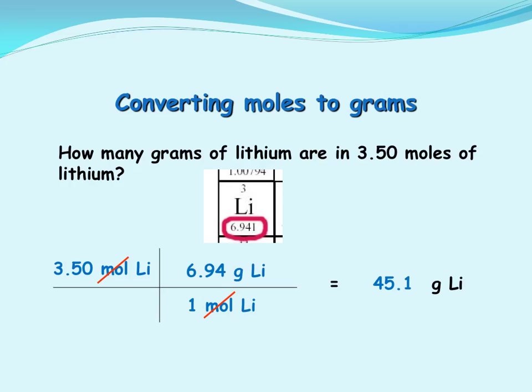Okay, to set up the problem, given information goes in the first bracket. Since we need to go from moles to grams, we know that we can use the molar mass of grams per mole as our conversion factor. We just need to arrange it so that moles and moles cross-cancel.